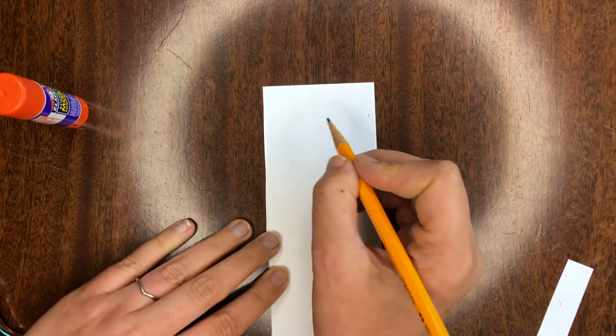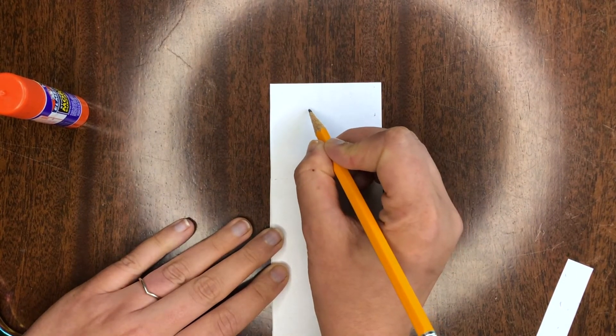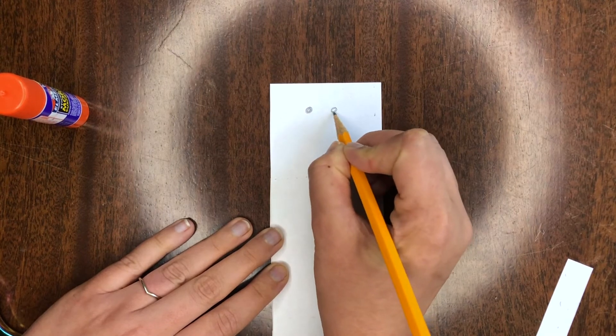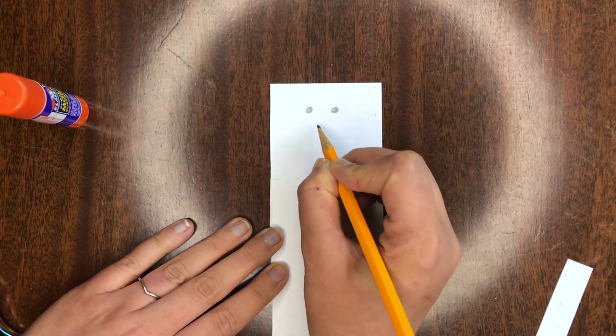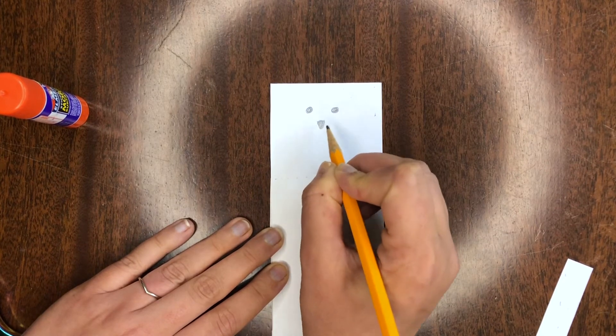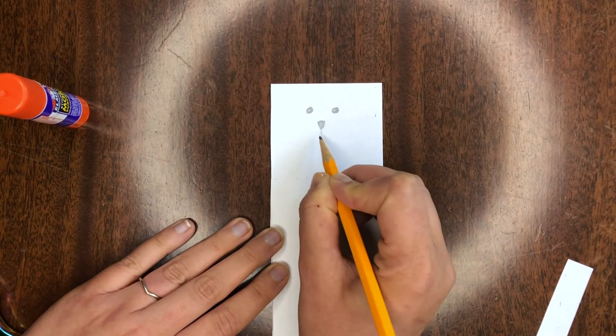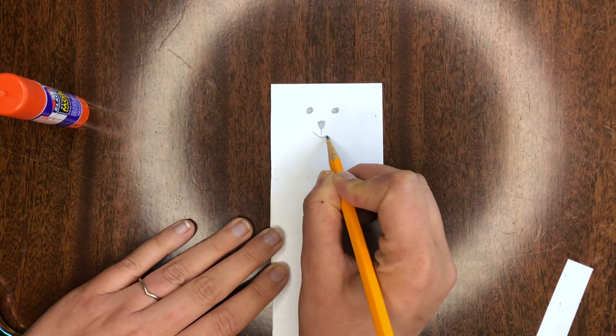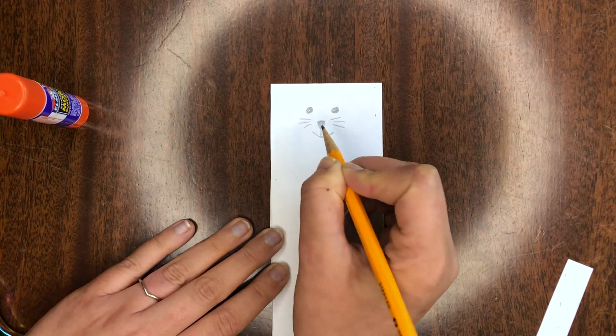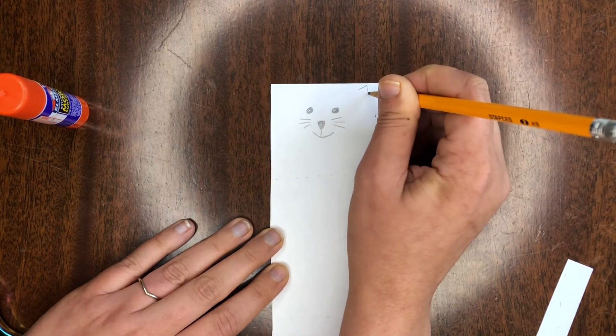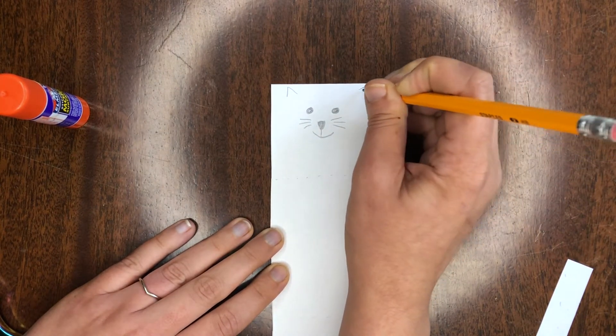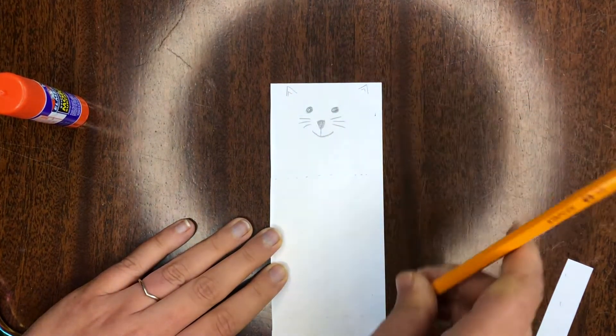So up here with the face I'm gonna draw two eyes, a little triangle nose, line coming from the nose, a little smiley face, some whiskers, and I'm gonna draw on my ears. You could go ahead and cut those out. I'm just gonna have them drawn on.